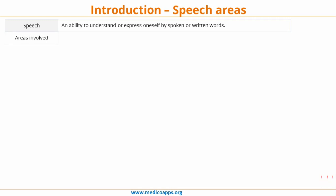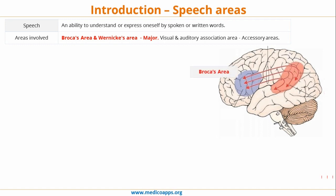Let's look at the areas of the brain which are involved in speech. The major areas are Broca's area and Wernicke's area. As you can see in this diagram, this is Broca's area, this is Wernicke's area, and both are connected by the arcuate fasciculus. The accessory areas involved in speech are the auditory and visual association areas, because you have to hear and see for proper speech.